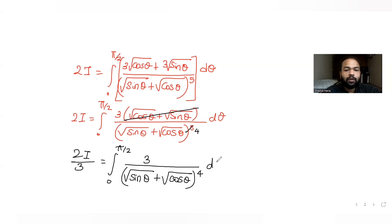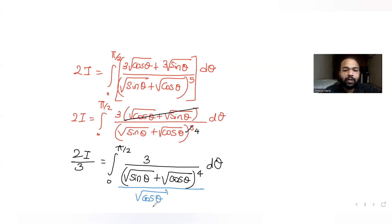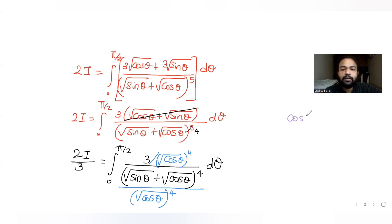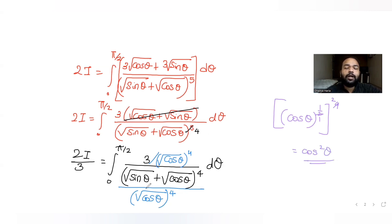Now to simplify this integral, I can bring sinθ over cosθ to make tanθ. To convert the entire denominator into terms of tan, I divide by (√cosθ)^4. That equals cos^(1/2) raised to the fourth power, which is cos²θ. So basically we divide numerator and denominator by cos²θ.